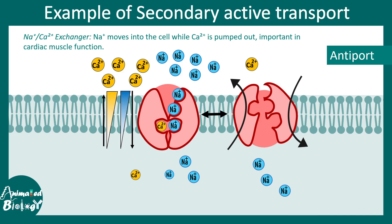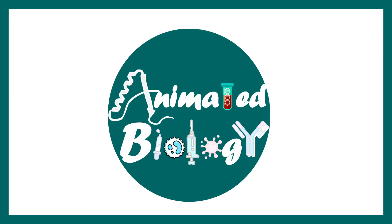Since the direction of movement is totally opposite, we can call this an antiport. But again, the sodium gradient created by primary active transport provides the electrochemical energy used by this exchanger to pump calcium outside. That is why it's a secondary active transport. So I hope the concept behind secondary active transport is super clear right now. See you in the next video.